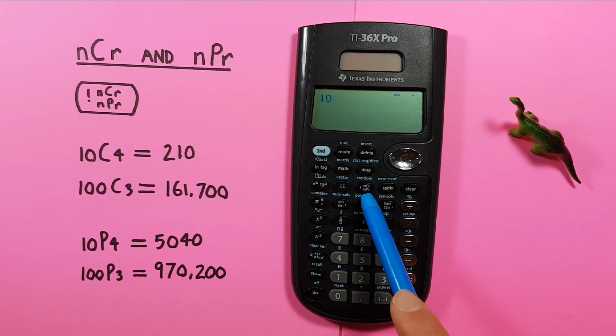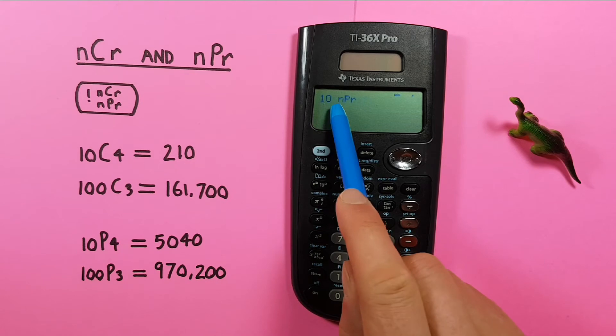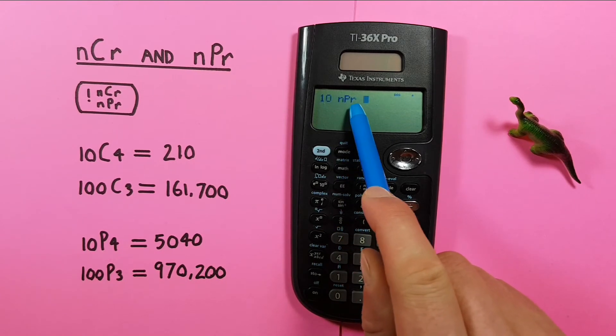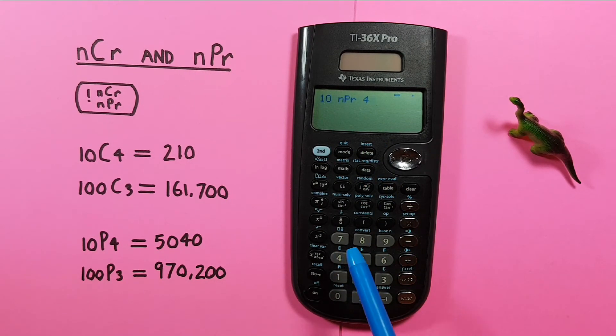hit the combination permutation key once, twice, three times so that we get the NPR there, put the 4 in and press enter.